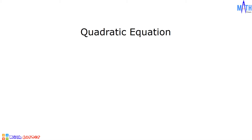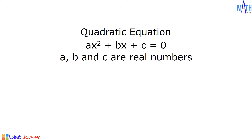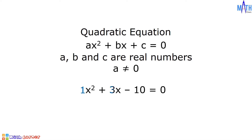Quadratic equation in standard form is ax squared plus bx plus c is equal to zero, where a, b, and c are real numbers, and a is not equal to zero. An example of a quadratic equation is x squared plus 3x minus 10 is equal to zero, where a is equal to 1, b is equal to 3, and c is equal to negative 10.